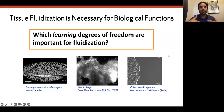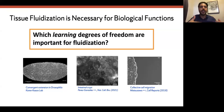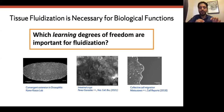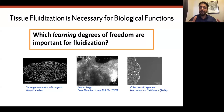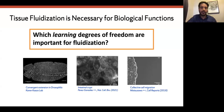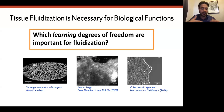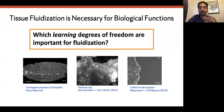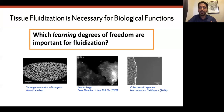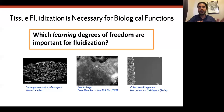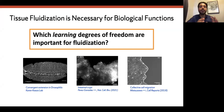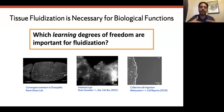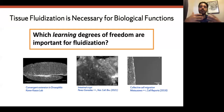Tissue fluidization is necessary for biological functions. Here I'm showing examples of movement: developmental stages, crypt folding, wound healing — all processes where cells have to move. This fluidization is necessary to actually perform these tasks. The question is: which learning degrees of freedom are important for fluidization?